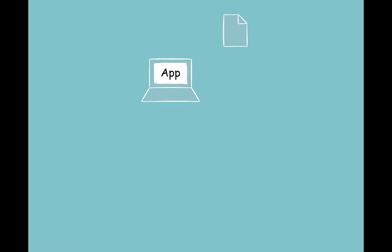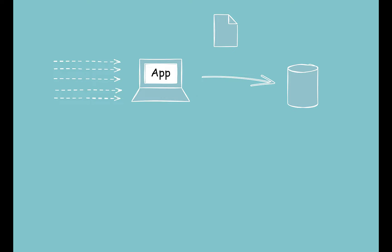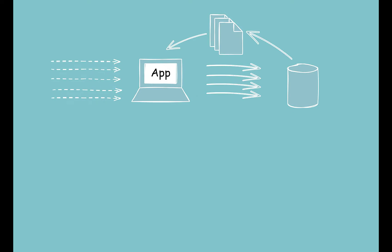Suppose you have a web application that manages articles. You get HTTP requests to save articles, update articles, fetch articles, and delete them. These articles are stored in a database. Each time a request to fetch an article arrives, the application queries the database and fetches it. If there are multiple requests to fetch the same article, it does not make sense to fetch it from the database again and again. Multiple accesses to the database also makes the application slower.